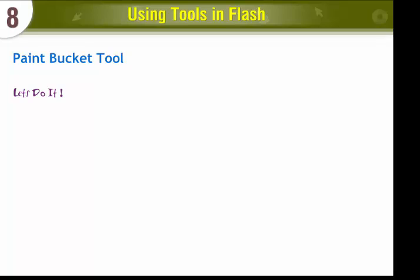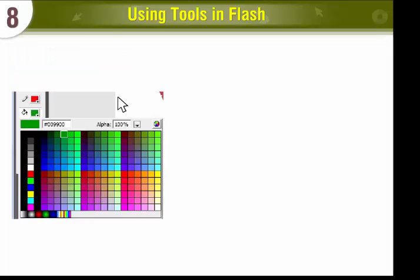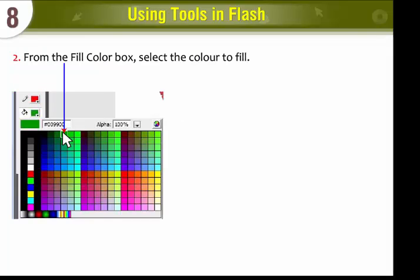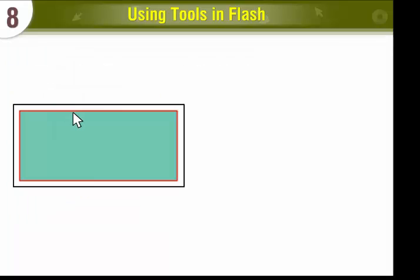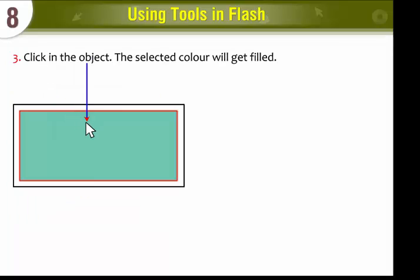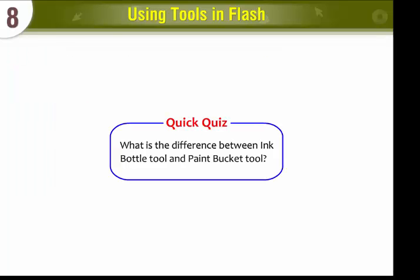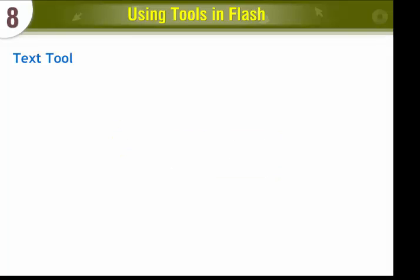Paint Bucket Tool. To use the Paint Bucket Tool, select the Paint Bucket Tool, then from the Fill Color box select the color to fill. Click in the object and the selected color will get filled. Quick Quiz: What is the difference between the Ink Bottle Tool and the Paint Bucket Tool?